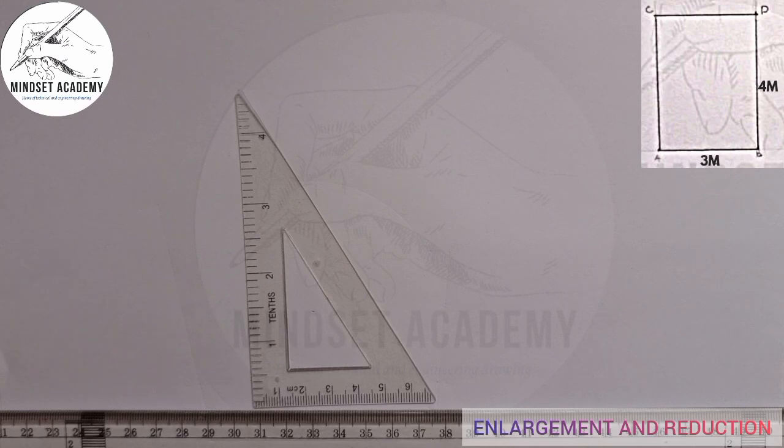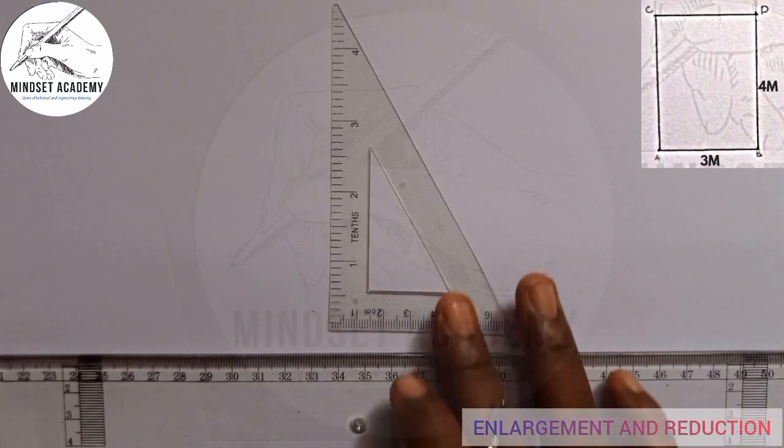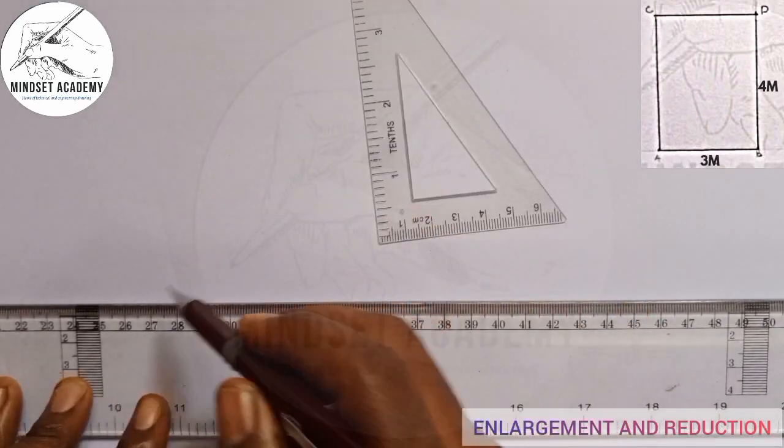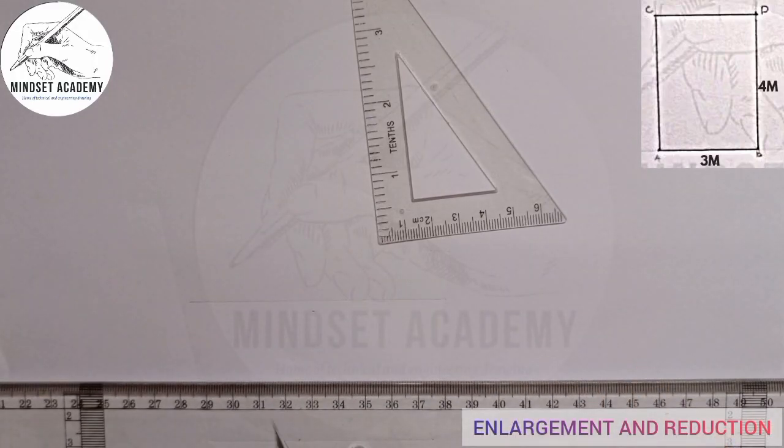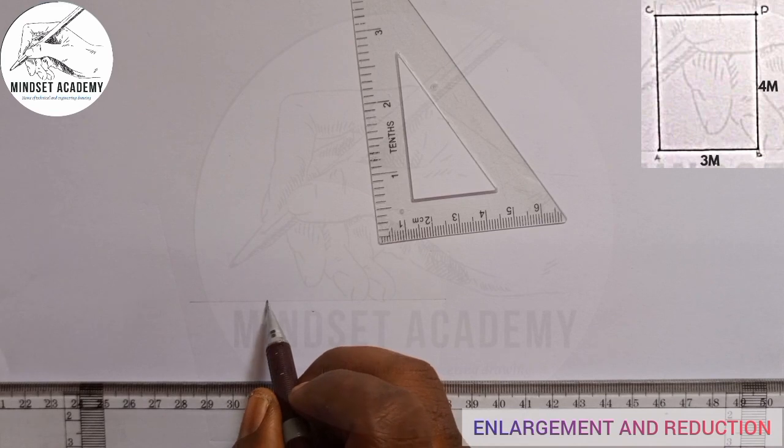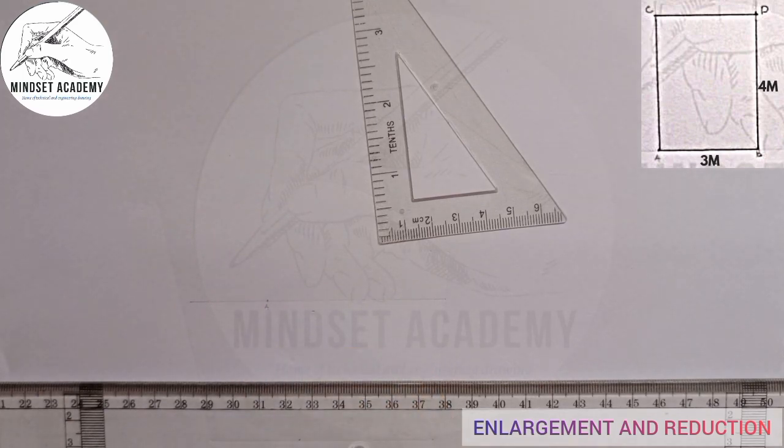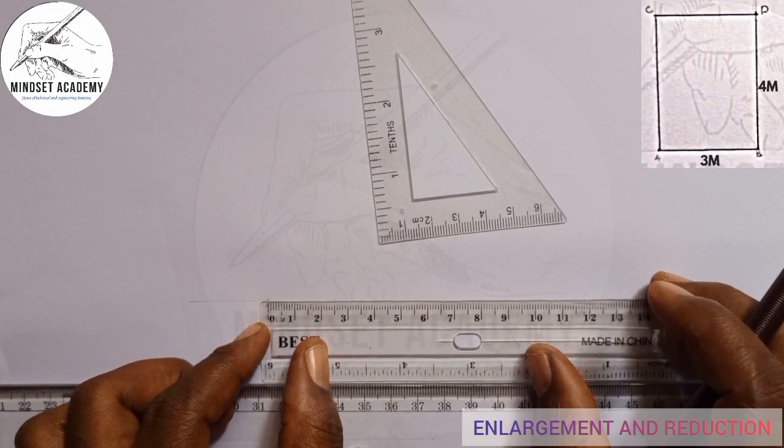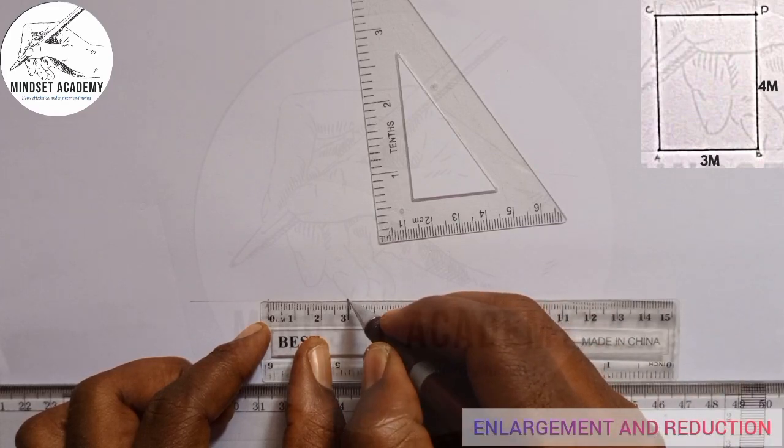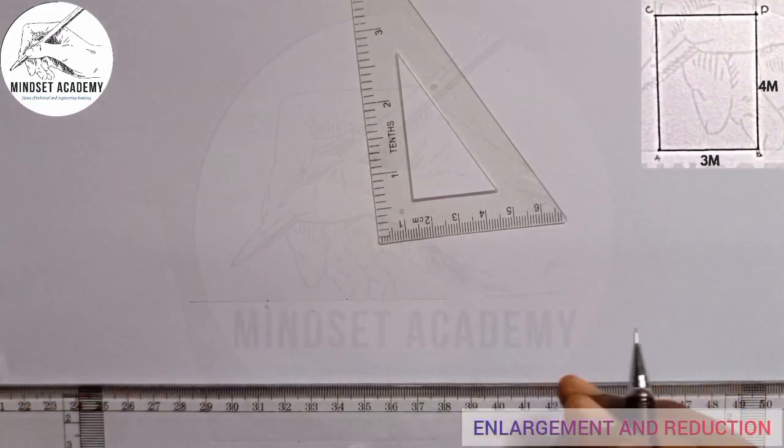The first thing you have to do is replicate that given figure. So let's say I want to place the figure on this portion here. I'll draw a horizontal line and pick a point on that line. Point A. Now, we're told that the length is 30 mm, so I'm going to measure 30 mm from 0 to 30.